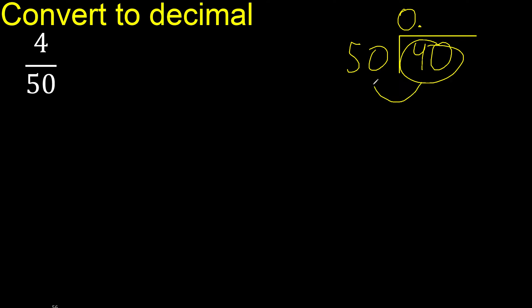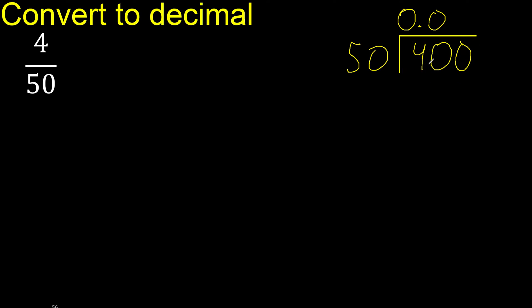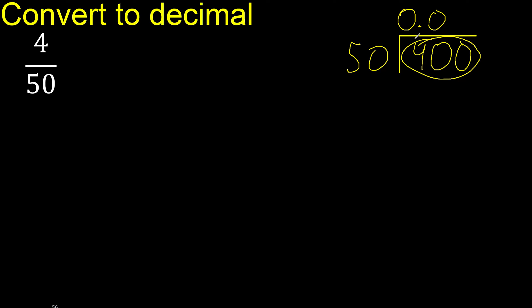40 is less than 50, therefore 0. 0 point is here. 400 is not less than 50, therefore with 400: 50 multiplied by what number is nearest to 400?